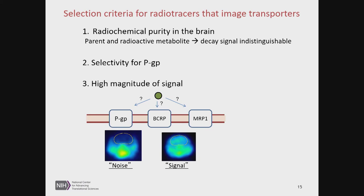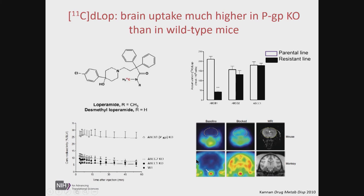Given this precedent, we set criteria for developing a radiotracer. First, radiochemical purity: you need a molecule that isn't broken down and metabolized very quickly, otherwise you'd be imaging metabolites as much as the parent tracer. Second, from a drug transport imaging point of view, we needed something highly selective for P-glycoprotein — we didn't want to study all transporters at once. Third, a general PET rule: you need a high magnitude of signal, and for us that was straightforward because we expected no brain signal under normal conditions and high signal when the transporter is blocked. The lead tracers selected were loperamide and its demethylated form, desmethylloperamide.